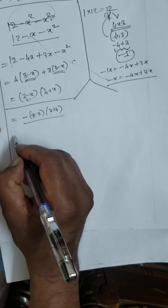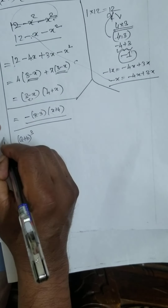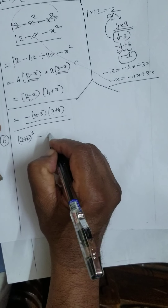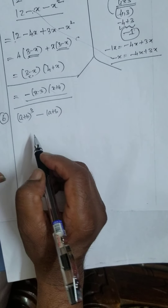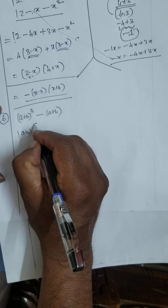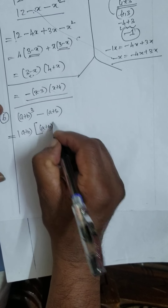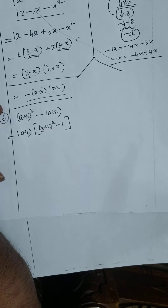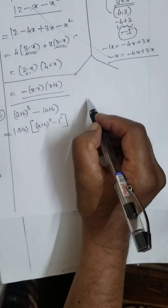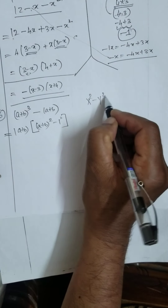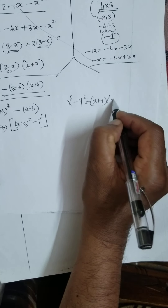Okay, now they are given: (a+b)³ minus (a+b). Sixth sum. How to solve this? (a+b) I will take as common factor: (a+b) · [(a+b)² minus 1]. This can again be written as (a+b)² minus 1². Now remember, there is a formula: x² minus y² = (x+y)(x−y). Same thing here: a² minus b² = (a+b)(a−b).